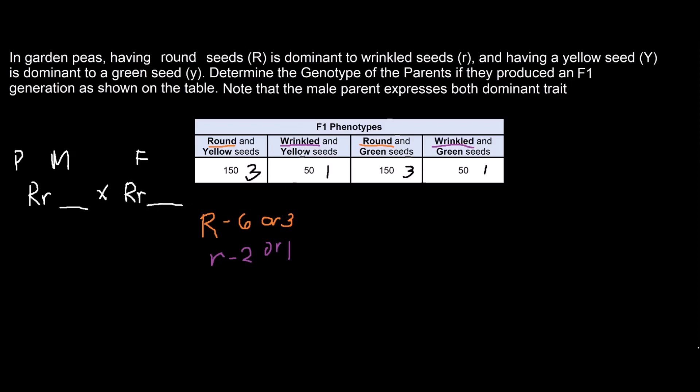Now dealing with the second trait, we can now count those who have yellow seeds. 3 plus 1, that's 4. So divided by 2, we'll have 2. For those who have green seeds, we also have 4.